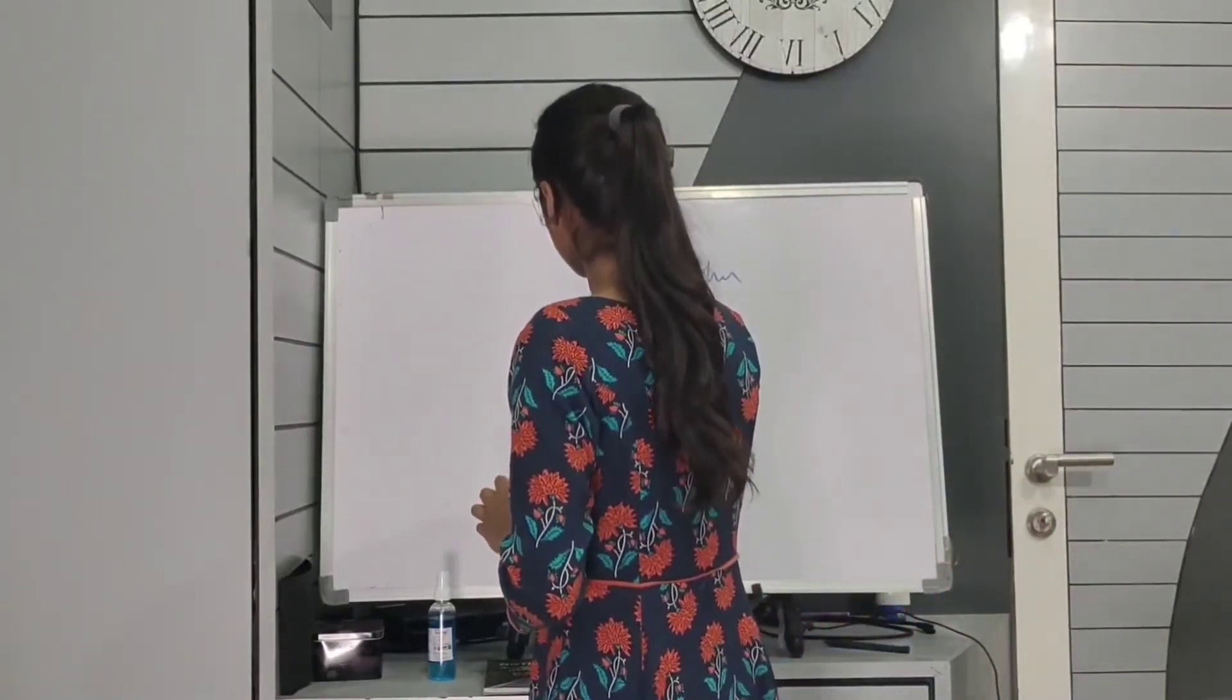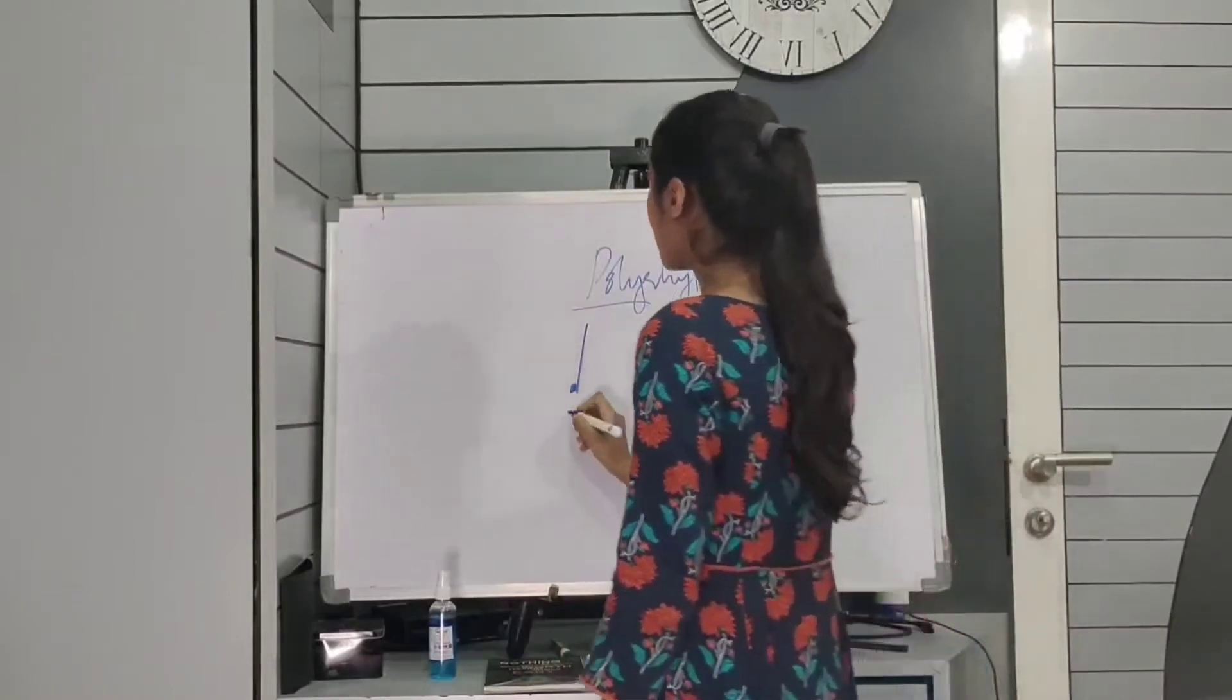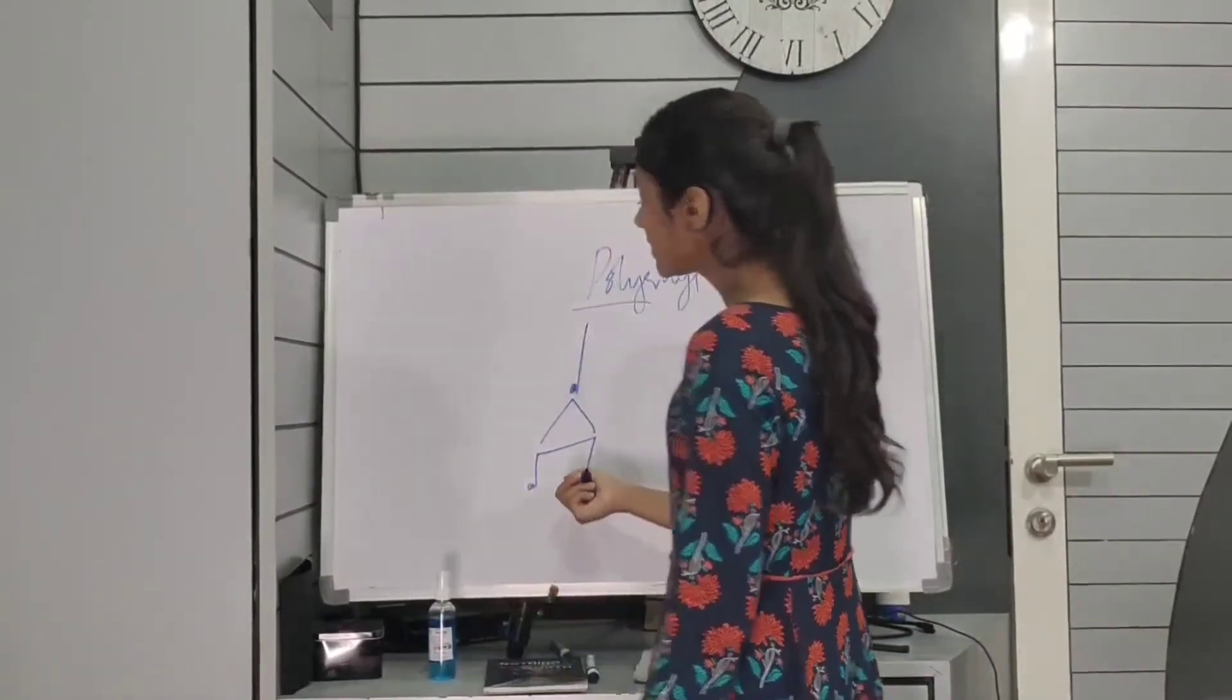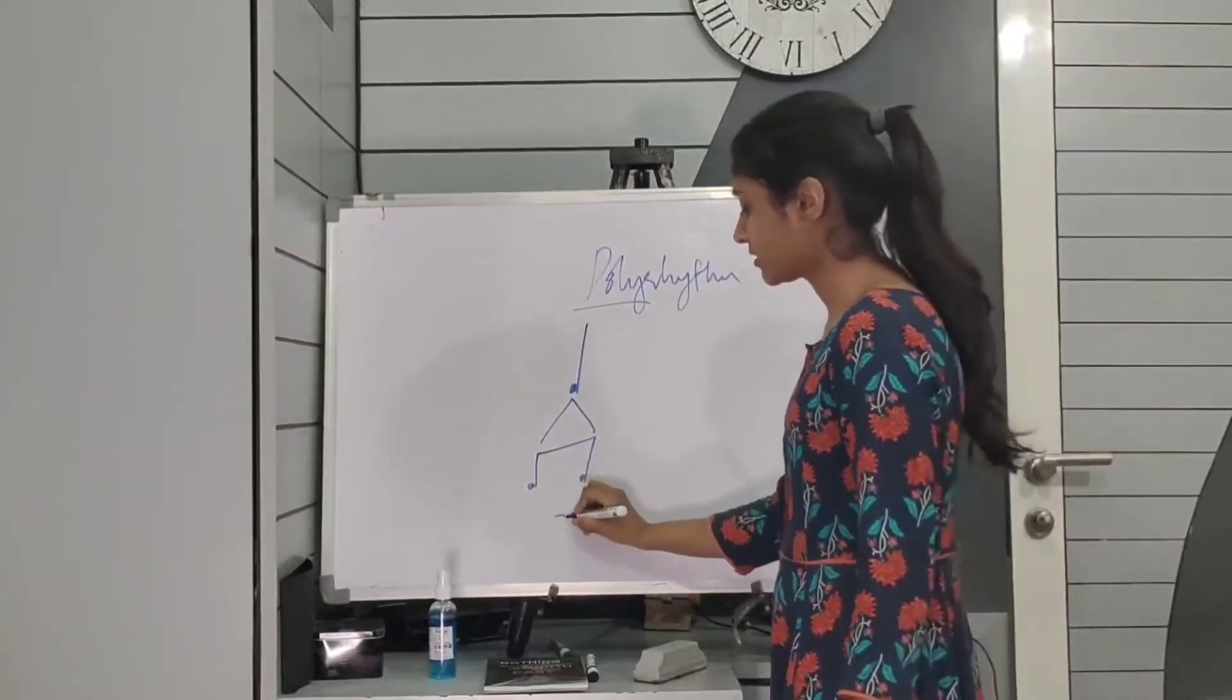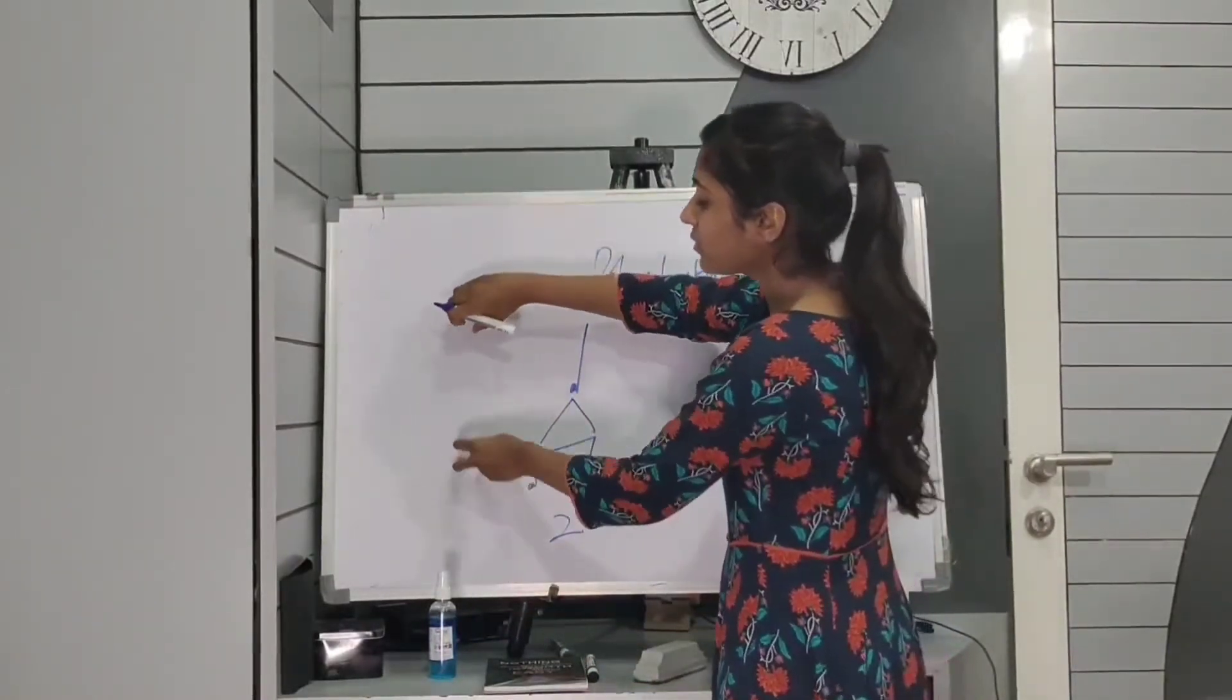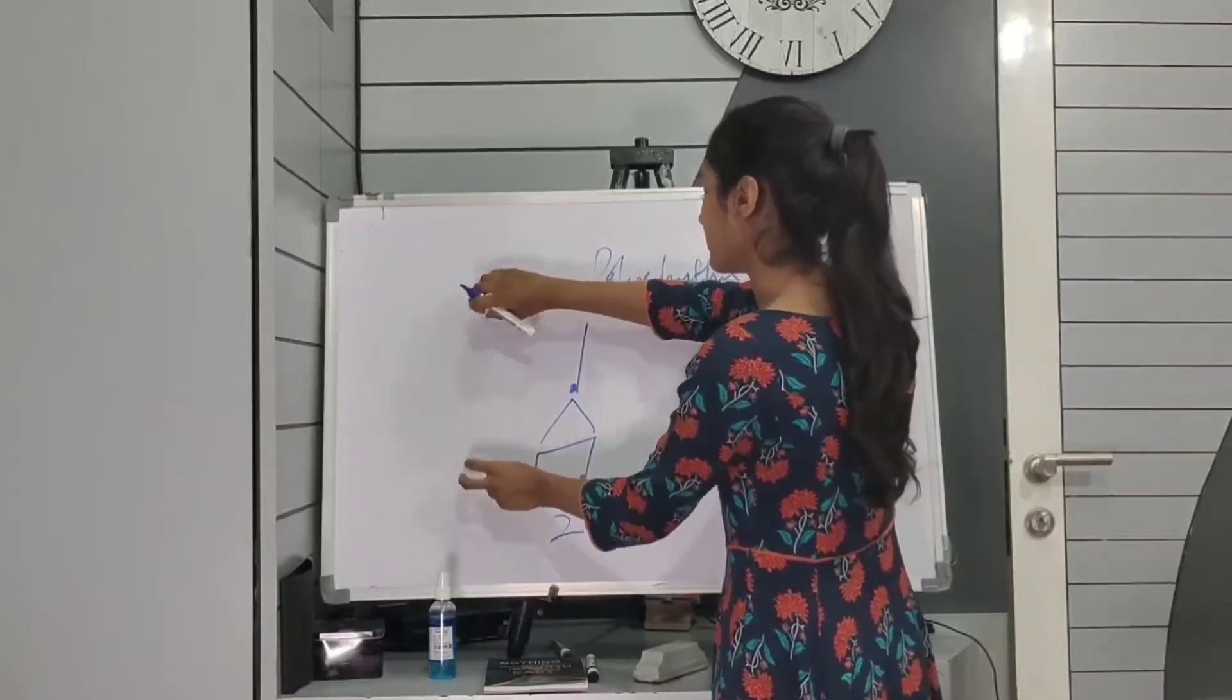So we are going to take a quarter note as one beat. And if we divide this quarter note into two equal parts, it's going to give me eighth notes, two eighth notes. So two beats or two notes in one beat. So it's going to go like one and two and three and.